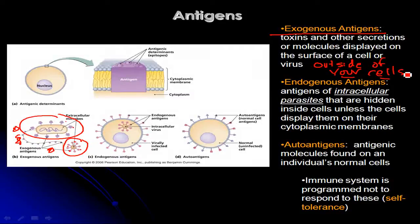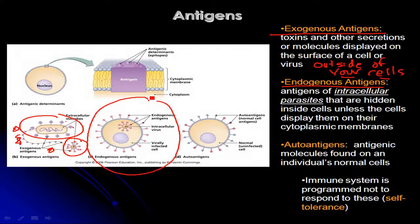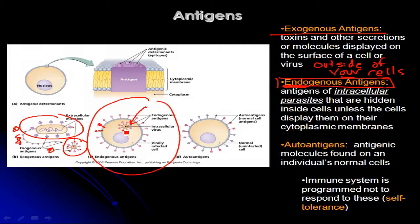Exogenous antigens can be part of a microbial cell, or part of somebody else's cells — like if you have a tissue transplant, they're just not part of your cells. Endogenous antigens, on the other hand, are represented by a virus that has infected a cell, gone inside it, and is producing viral proteins and other molecules inside that cell. Many of those function as antigens but they're inside one of your cells, so they're considered endogenous antigens. Virus-infected cells will very often display on their surfaces proteins actually produced by the virus — those are also examples of endogenous antigens.